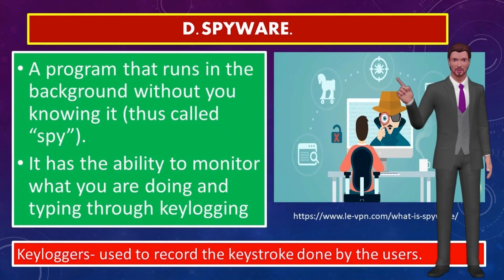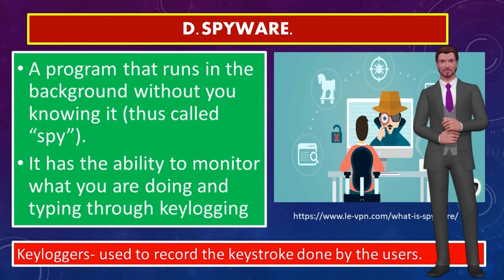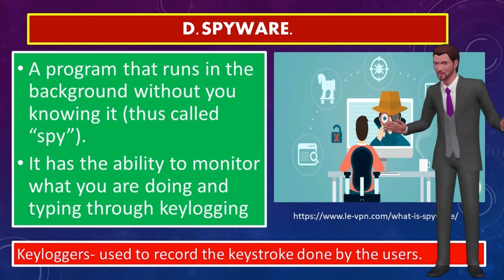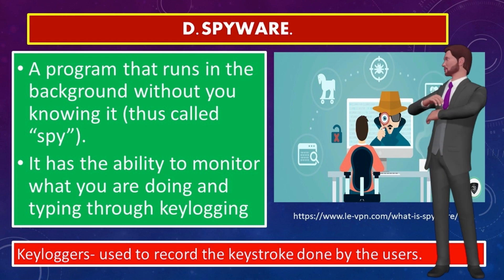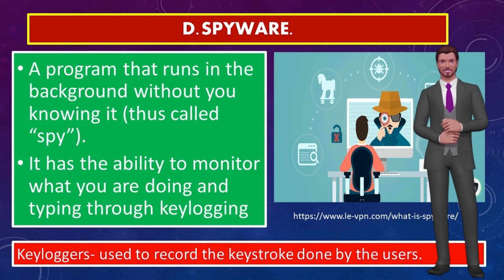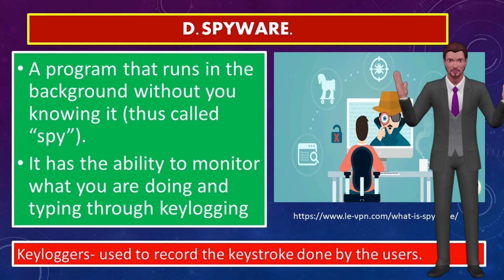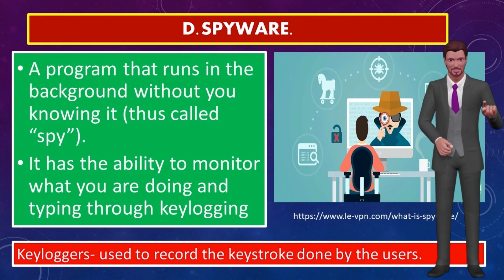The spyware. Spyware is a program that runs in the background without you knowing it — thus, it is called spy. It has the ability to monitor what you are doing and typing through keylogging. Major anti-virus programs have incorporated anti-spyware programs in their products, and many internet-based companies have offered anti-spyware programs for a fee, and some are free. But you must be careful which one to use to ensure your protection. Keyloggers are used to record the keystrokes done by the users, to steal their passwords or any sensitive information. It can record emails, messages, or any information you type using your keyboard.